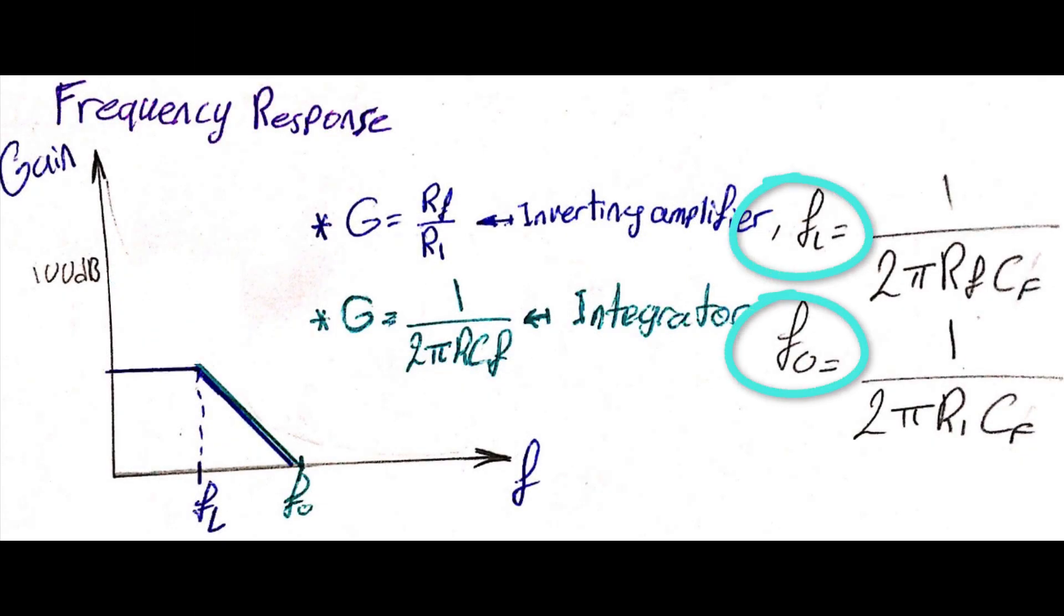These parameters are important for op-amp circuit design because in order to let this operational amplifier work in integrator mode, the input signal frequency must be higher than FL. Notice that any input signal frequency higher than F0 won't appear at the output. So make sure that your input signal frequency falls between FL and F0.